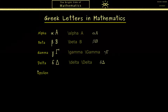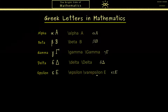Immediately after delta we find epsilon. We only use the lowercase one because the capital one is just an E. In LaTeX you find two variants for the lowercase letter, however most of the time we would prefer the second one.